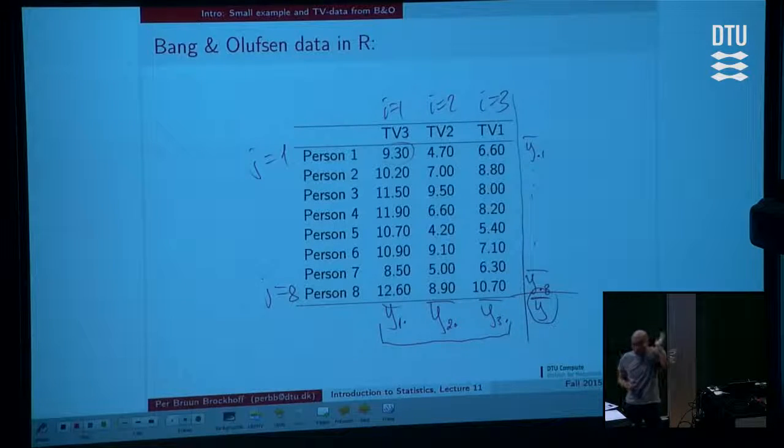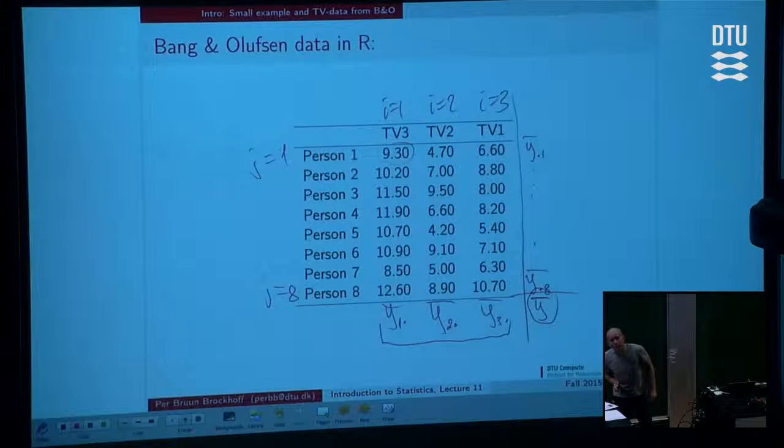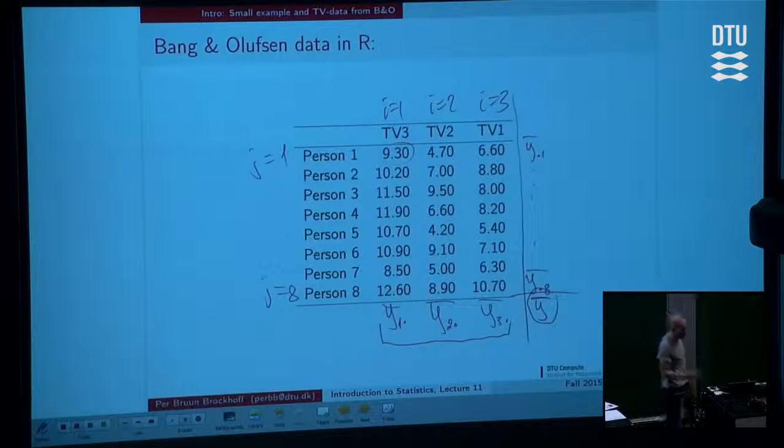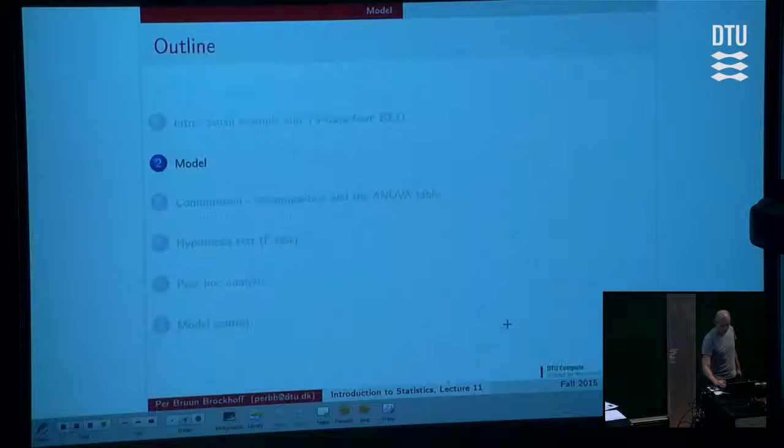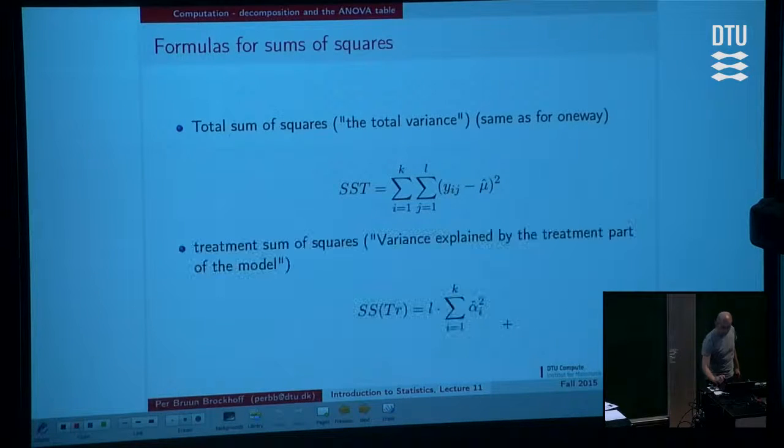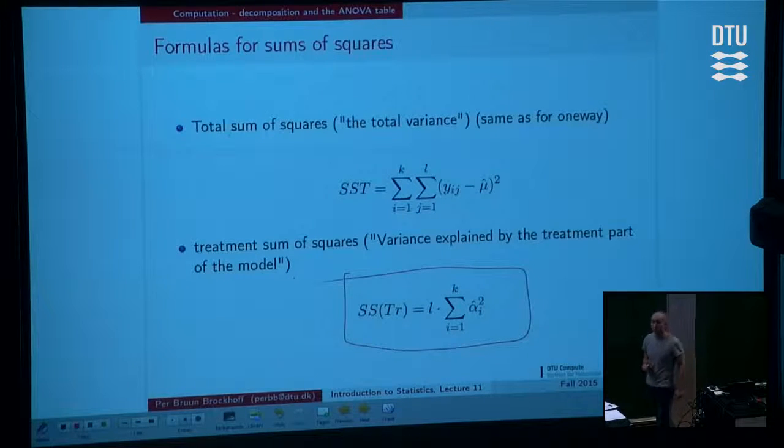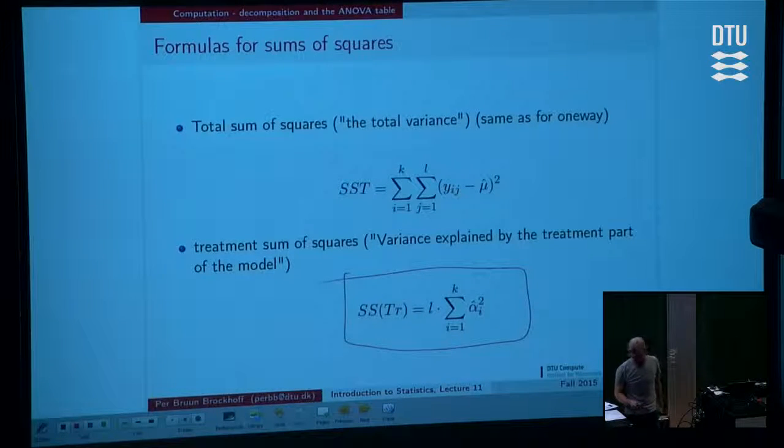If I just for a second ignore the rows, so I just copy my treatment sum of squares computation from last week. That is the way to measure how different are the three TV means from each other. I run back to the slide that we are looking at. This one. This is a copy of my computation from last week, where I take the three means and measure how different are they by computing the variance of the three means, basically.